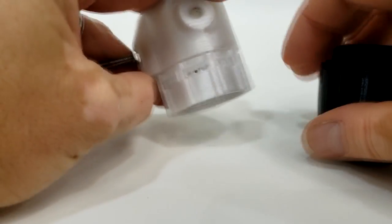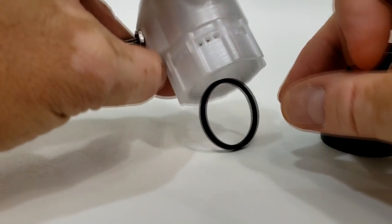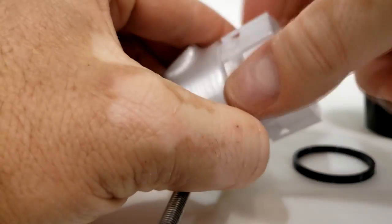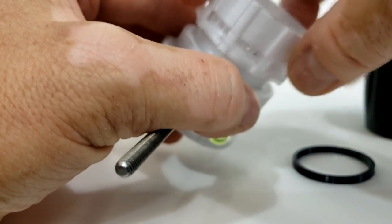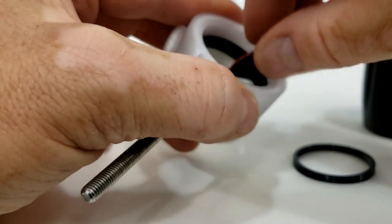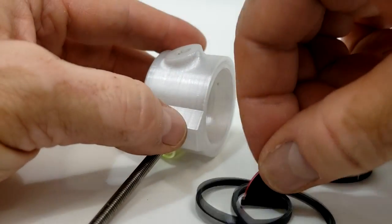The scope does come with two separate TPU 3D printed o-rings and they're two different sizes.